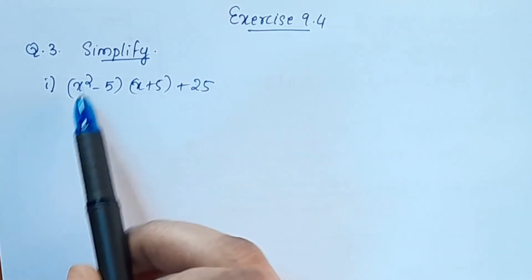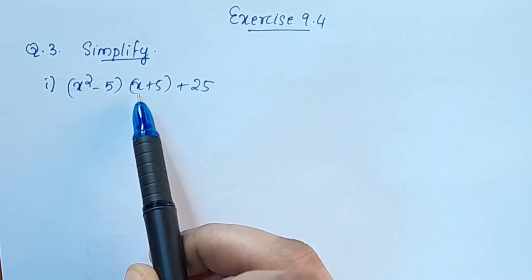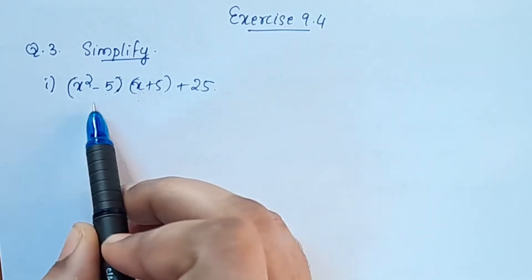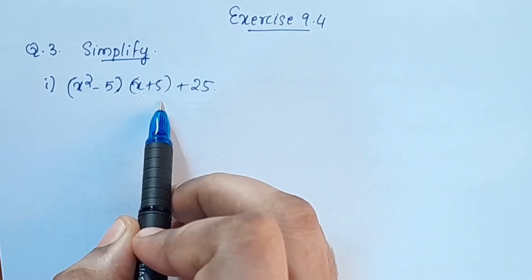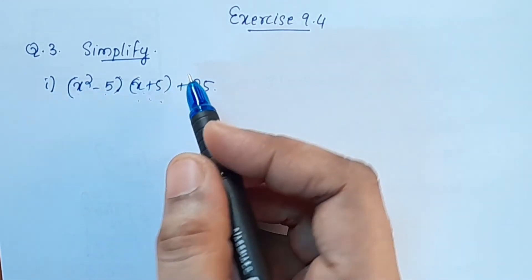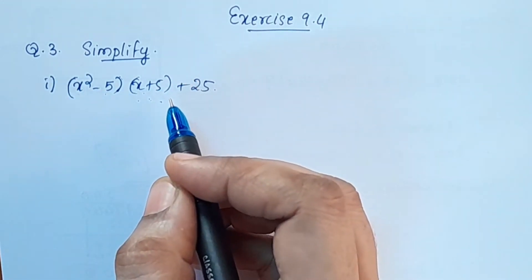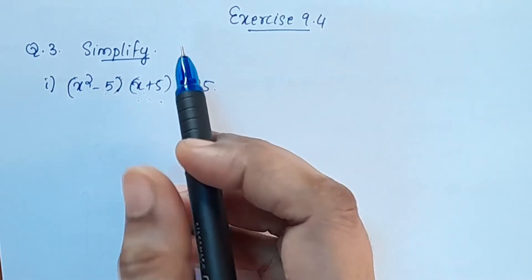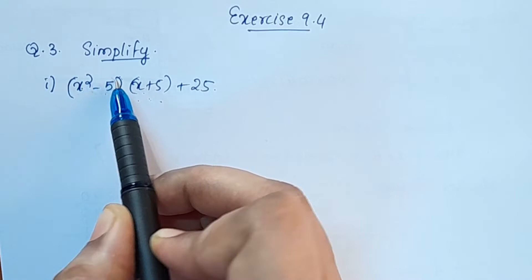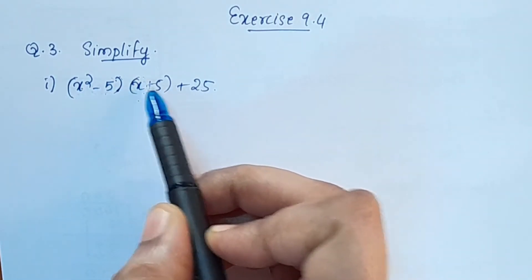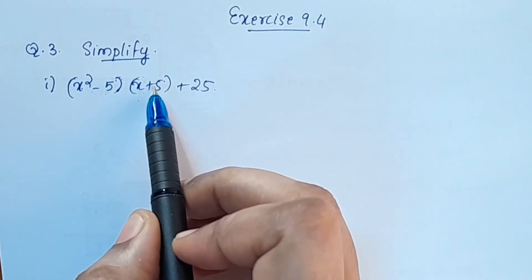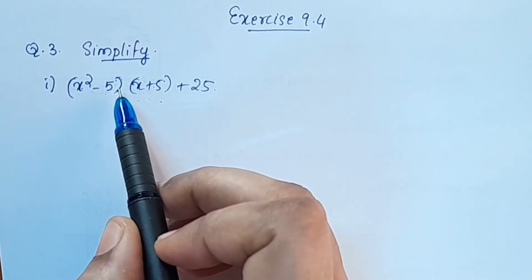Now the question is x² - 5x + 5 + 25. We have 2 binomials multiply by 2 binomials — a 2-term expression. x² is negative 5x, so we have binomials multiplied by binomials.